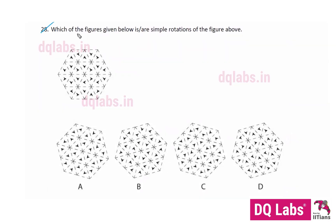Question number 28. Which of the figures given below is or are simple rotations of the figure above? So this is the initial figure and some of these in the options have been unedited but only rotated, and some in the options have been edited and then rotated. So we should find out the ones which have only been rotated without editing anything in the figure.